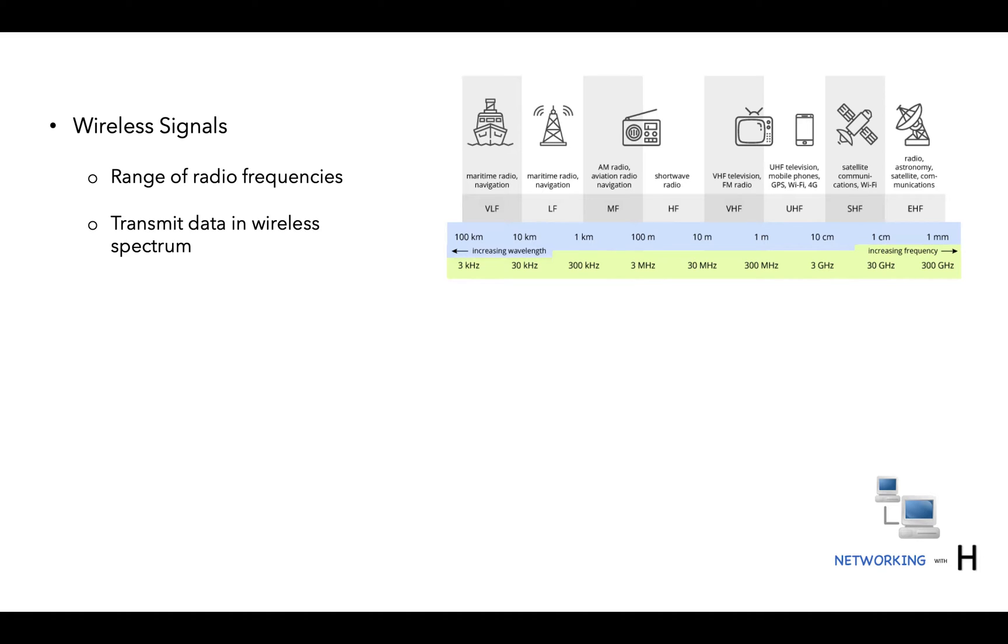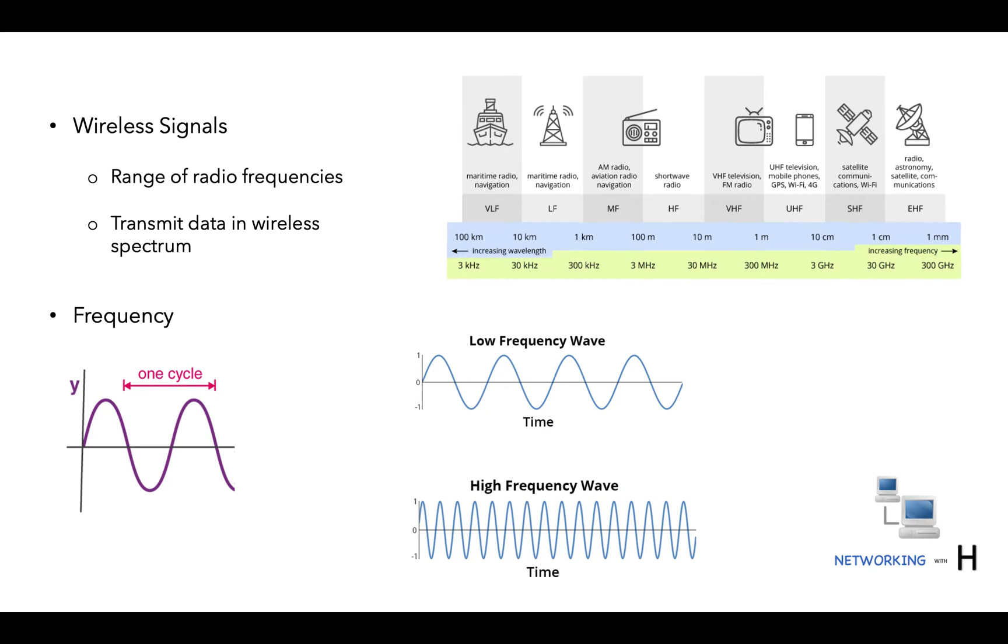As explained in my last video, frequency is nothing but the number of times the signal vibrates or makes one complete up and down cycle in one second. If the signal vibrates very slowly it has a low frequency. If the signal vibrates very quickly it has a high frequency.